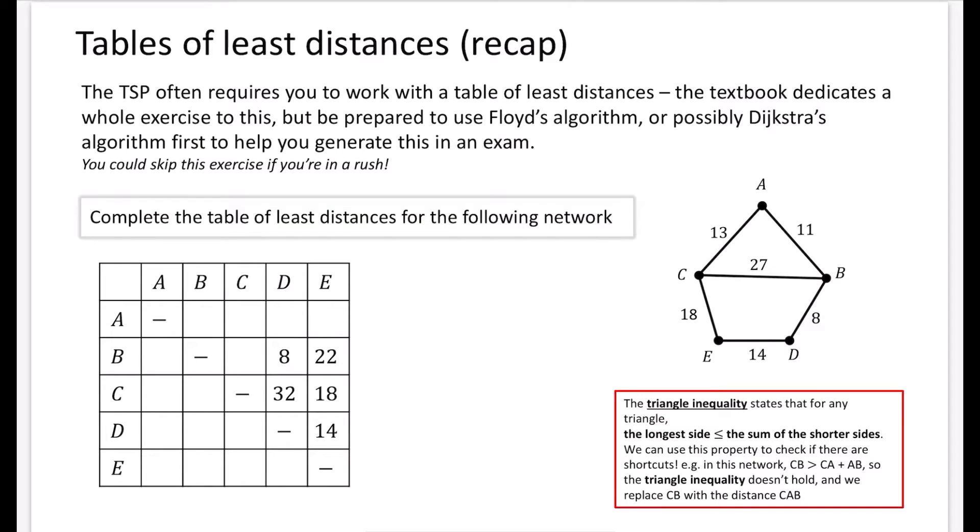So I'm going to begin by finding the shortest distance between A and B. And it's obviously just going to be the 11 that we've got there. And then the shortest distance between A and C is obviously going to be that nice short 13. Between A and D, we just want to check which is quicker. Is it going to be quicker to go this way or this way? And pretty obviously it's going to be quicker to go with the 11 and the 8. So that is 19 for that one.